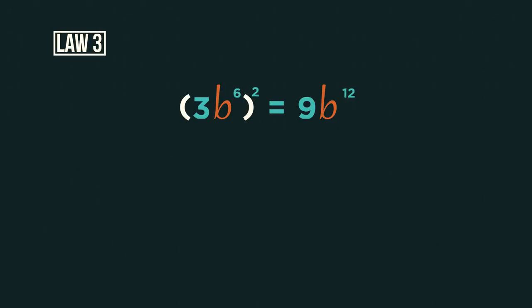If we wrote this out it would be three b six multiplied by three b six. And we know that when we multiply indices we add the powers. So three multiplied by three is nine, and six plus six is twelve. So just remember when we raise a power to a power we just multiply the two powers together.